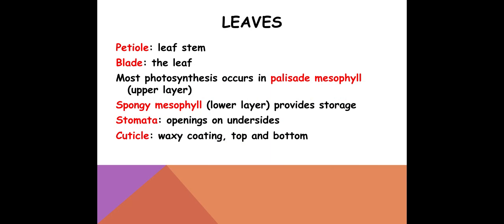Leaves. We've got a petiole — that's the little stem of the leaf. The leaf itself is called a blade. Most of the photosynthesis occurs in tissue we call the palisade mesophyll, which is on the upper layer. Then the spongy layer, or spongy mesophyll, is lower — that provides storage and is much more loosely arranged to allow for air to move. Of course, we've got the stomata, which are openings on the underside of the leaf to allow for gas exchange. And then we've got a cuticle, which is a waxy coating on the top and bottom that protects our leaves.